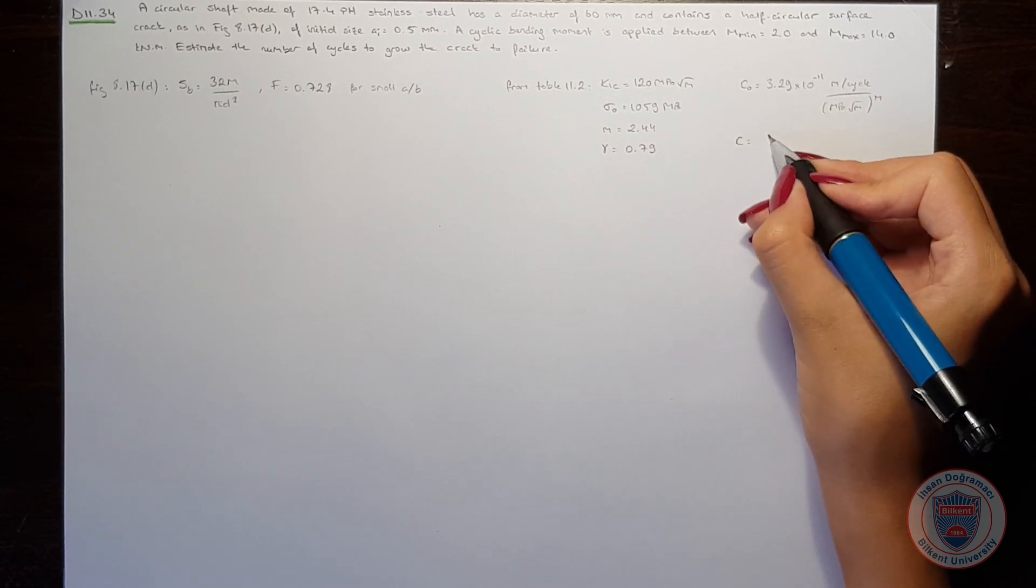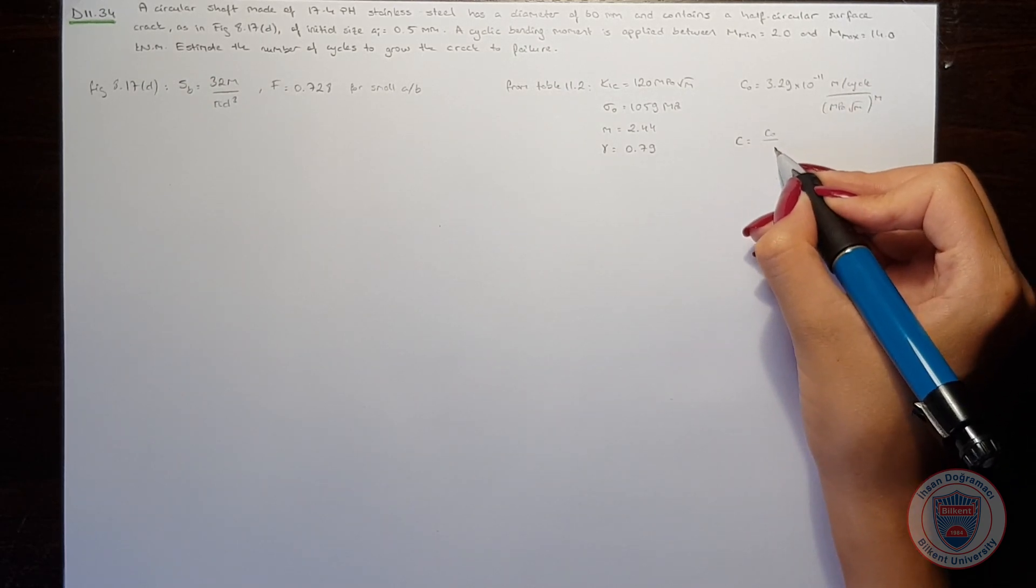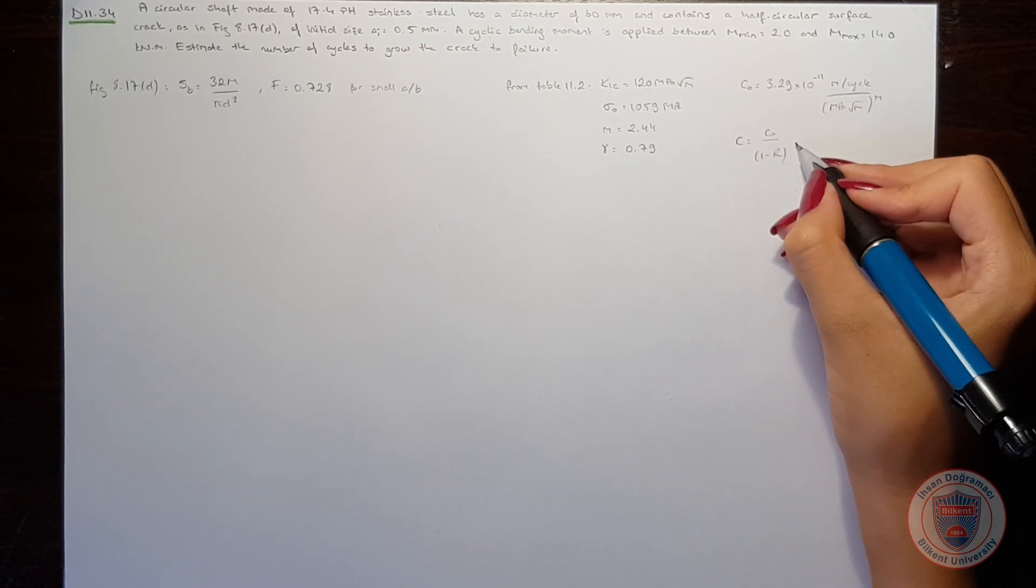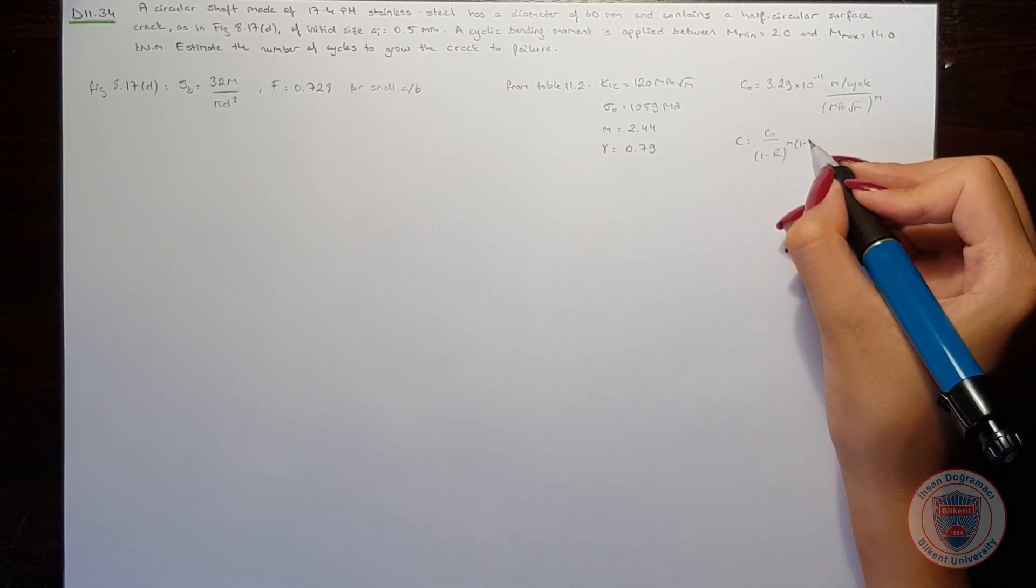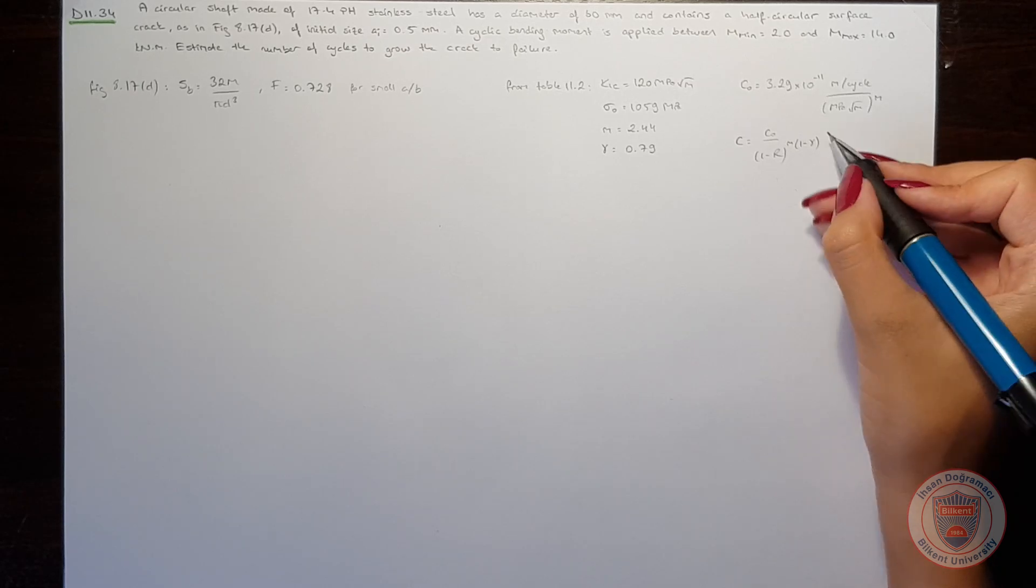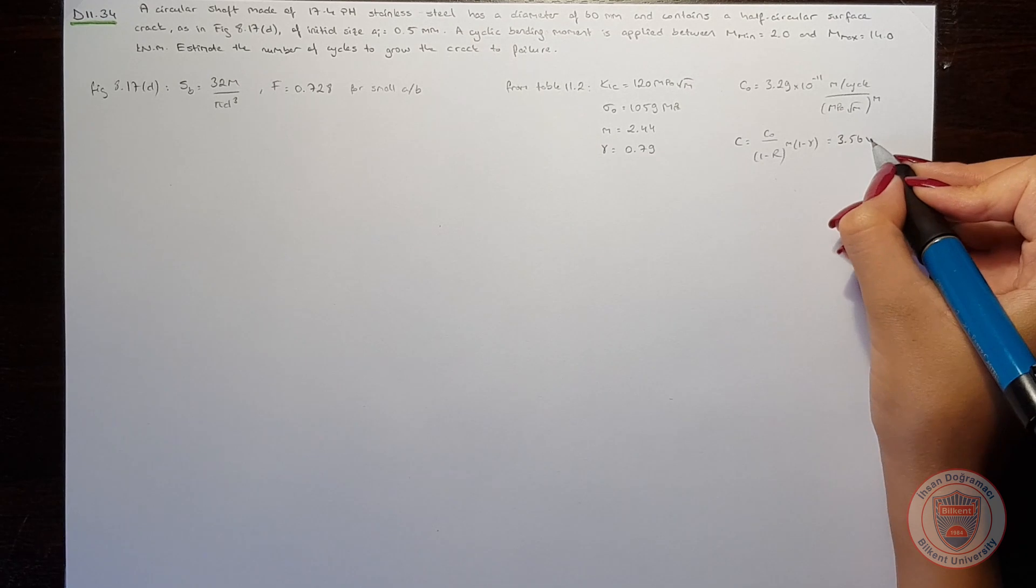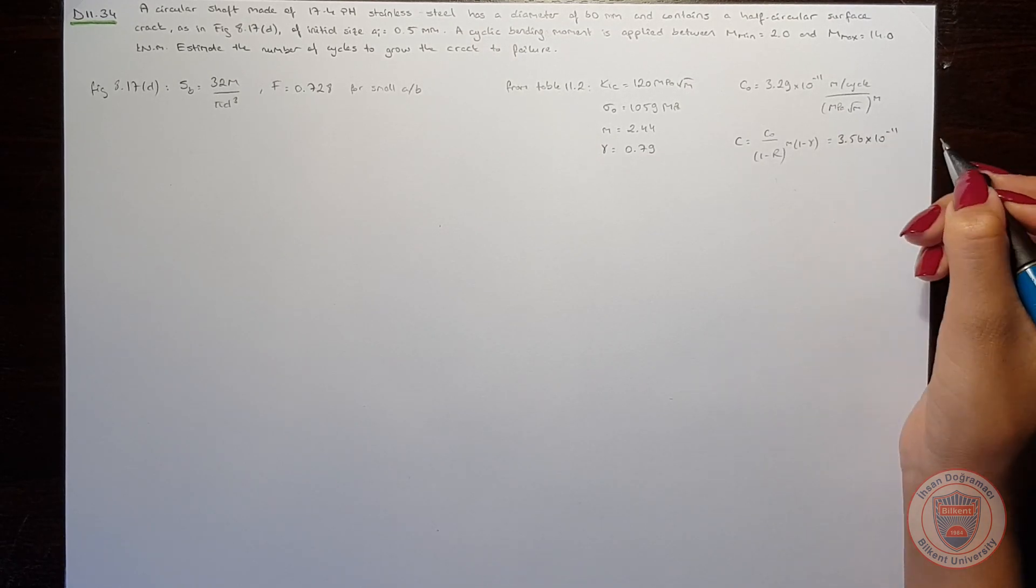We know that C is equal to C₀ over (1 minus r) to the power of m times (1 minus γ), and when we compute we will obtain 3.56 times 10 to the power of minus 11.